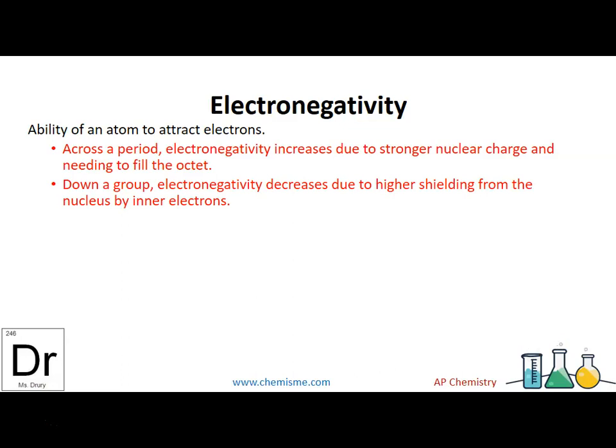Down a group, the electronegativity decreases because electrons are further from the nucleus. It makes the nucleus have a hard time attracting those electrons. Therefore, attracting a new electron is going to be even harder.